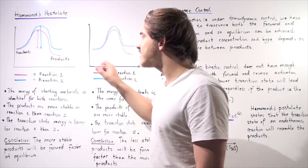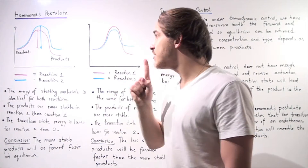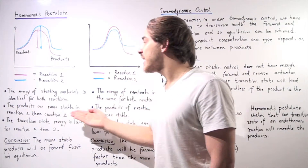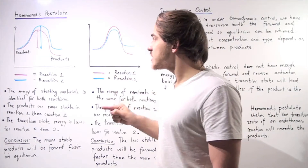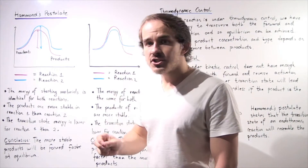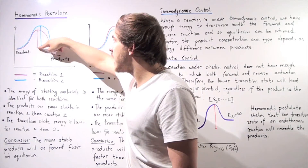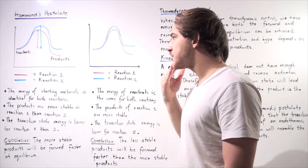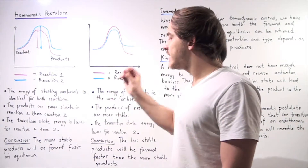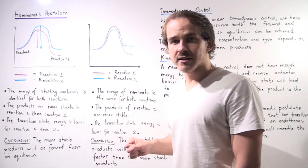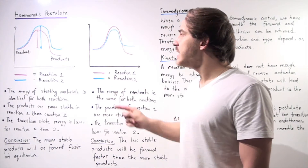Looking at the product side, the purple line is lower than the blue line, meaning the products are more stable in reaction one than reaction two. Now observing the transition state, the transition state energy for reaction one is also lower than that for reaction two. Our activation energy for reaction one is lower than that of reaction two, and that means reaction one will take place quicker. So the more stable products of reaction one — the purple products — will be formed faster at equilibrium than the blue products.